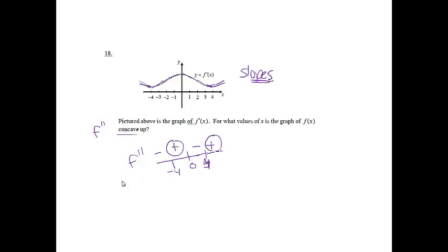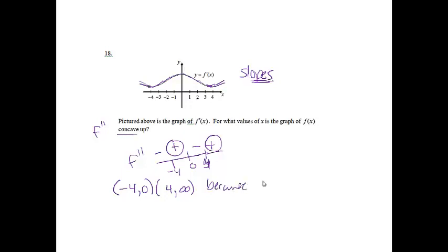Looking at where f double prime is positive — that's where f is concave up — the graph is concave up from negative 4 to 0, and then again from 4 to infinity, because f double prime is positive on those intervals.